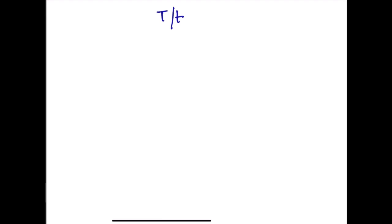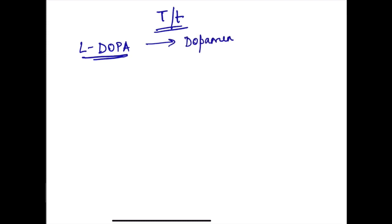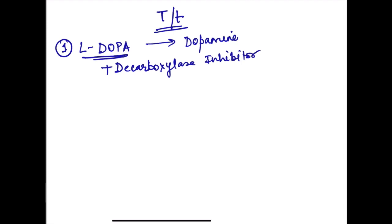For treatment, since dopaminergic neurons are destroyed, we need to increase dopamine in the striatum. Dopamine itself is not given directly; instead L-dopa is administered because L-dopa crosses the blood-brain barrier and is converted to dopamine in the brain. Along with L-dopa, decarboxylase inhibitors are added to prevent the peripheral conversion of L-dopa to dopamine, so more L-dopa crosses the blood-brain barrier.